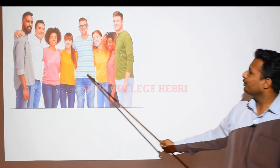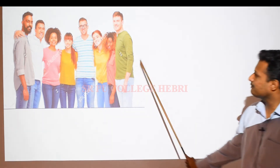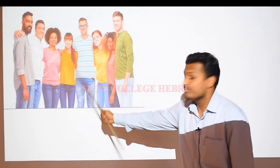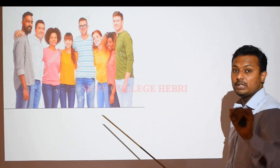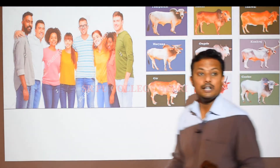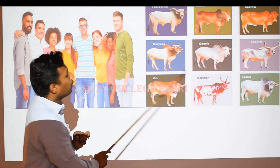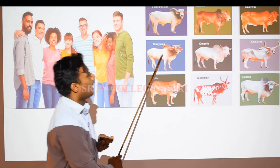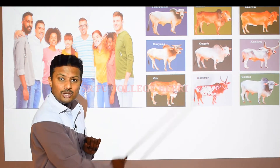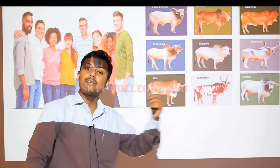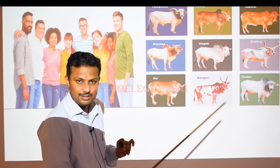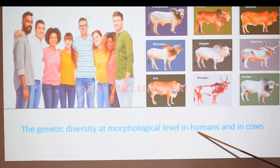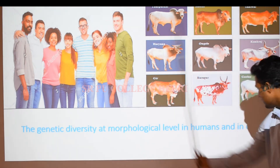Looking at examples of genetic diversity: you can see differences in height, skin color, hair type, and eye color among human beings — all based on genetic differences. Similarly, in India alone there are many different breeds of cows — Sindhi, Sahiwal, Tharparkar, Haryana, Ongole — that are morphologically and physiologically different. One breed may be very strong, another may be bred for high milk production, each with different characteristic features. This is genetic diversity at the morphological level.